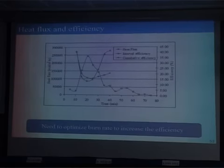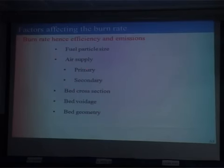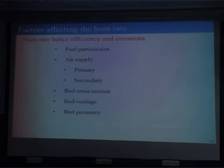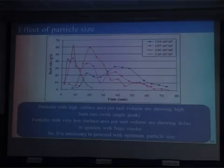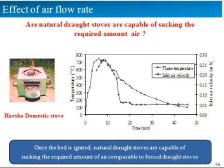A number of experiments were carried out to validate this, and we found these are the parameters responsible for controlling the rate of energy delivery from the fuel: fuel particle size, air supply, distribution in the form of primary and secondary air, bed cross section, bed voidage, and bed geometry. These were optimized through experiments in different stoves, leading to an optimum stove design.